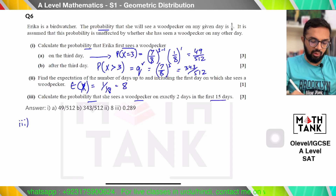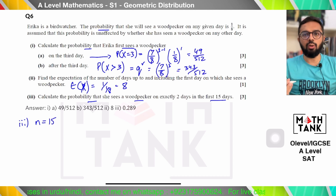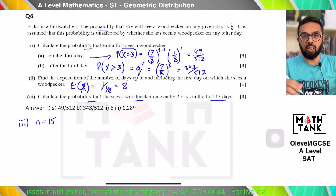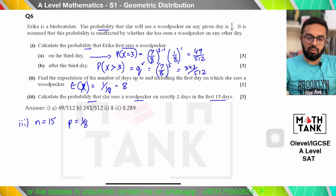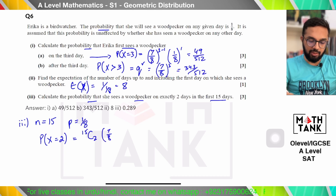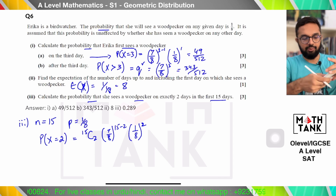Part 3 asks: calculate the probability she sees a woodpecker on exactly two days in the first 15 days. Since there's a fixed number of days, this is no longer geometric — we move to a binomial distribution. With n=15, p=1/8, and r=2 successes: 15C2 × (7/8)^13 × (1/8)^2, giving 0.289.